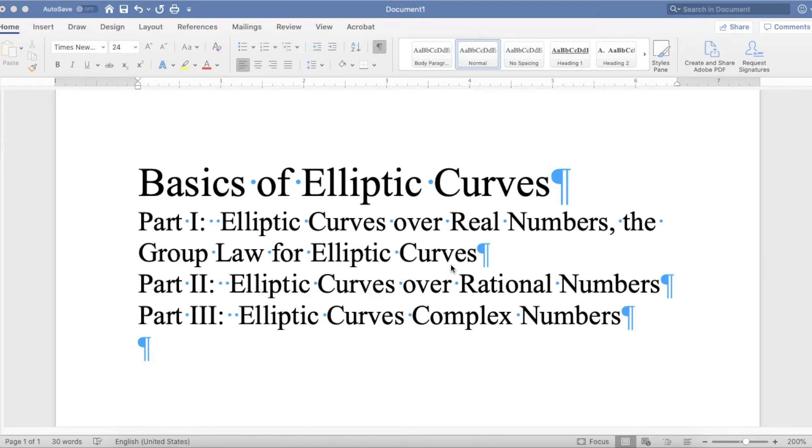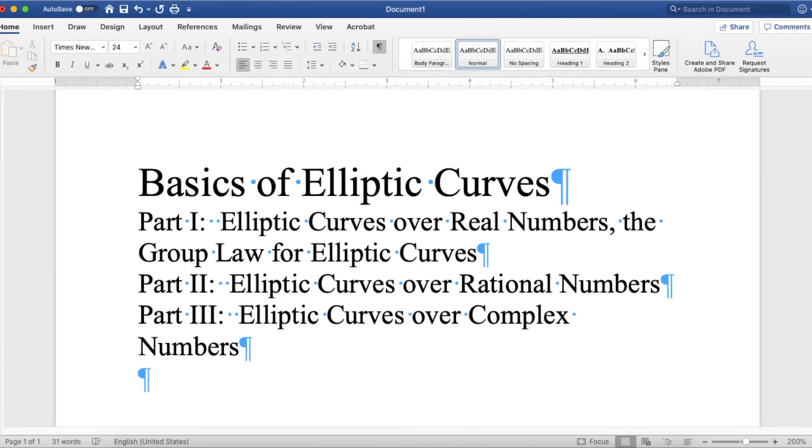Part two will be elliptic curves over rational numbers and proving the group law that when you add two rational points together, you get another rational number. And then part three will be elliptic curves over complex numbers, and then we'll move on to modular forms.